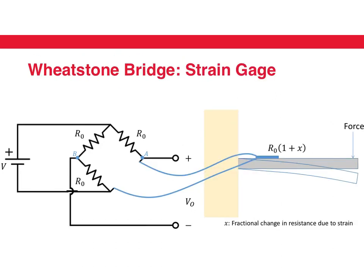In practice, we run wires from the strain gauge to the Wheatstone bridge, connect it in, and measure the output to get the change in resistance. However, in many cases a strain gauge will not only change its resistance depending on the strain (measured by X), but will also have a temperature dependence. The resistance of the strain gauge becomes R0 times (1 plus X) times (1 plus Y), where Y is the fractional change in resistance due to temperature.